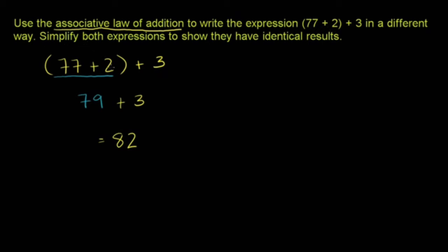Now, the associative law of addition tells us it doesn't matter whether we add 77 and 2 first, or whether we add 2 and 3 first. We can associate them differently. So this is going to be the exact same thing as we could write it this way. So let me write them all: 77 plus 2 plus 3.